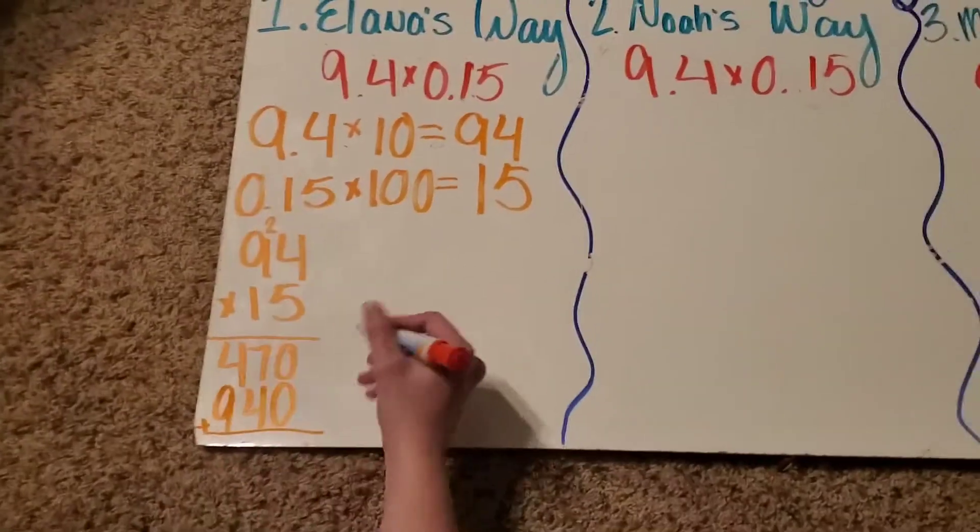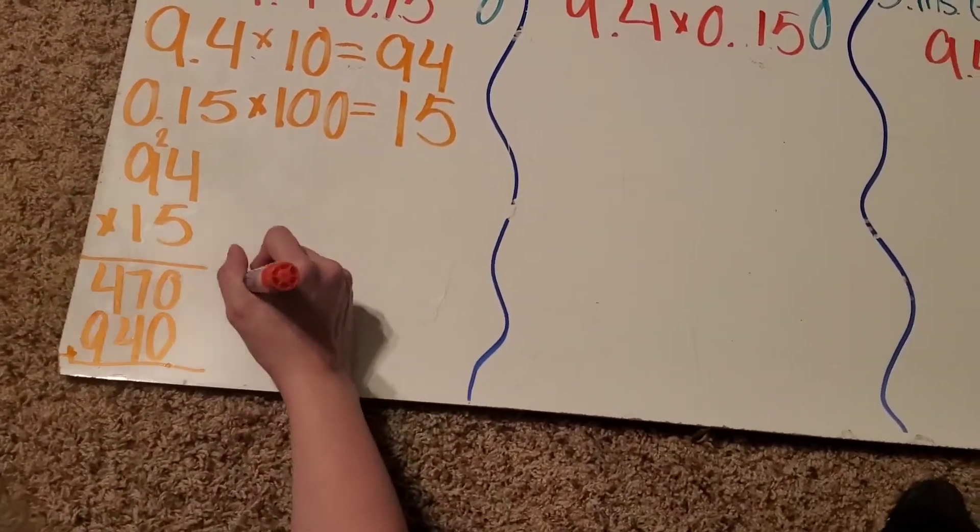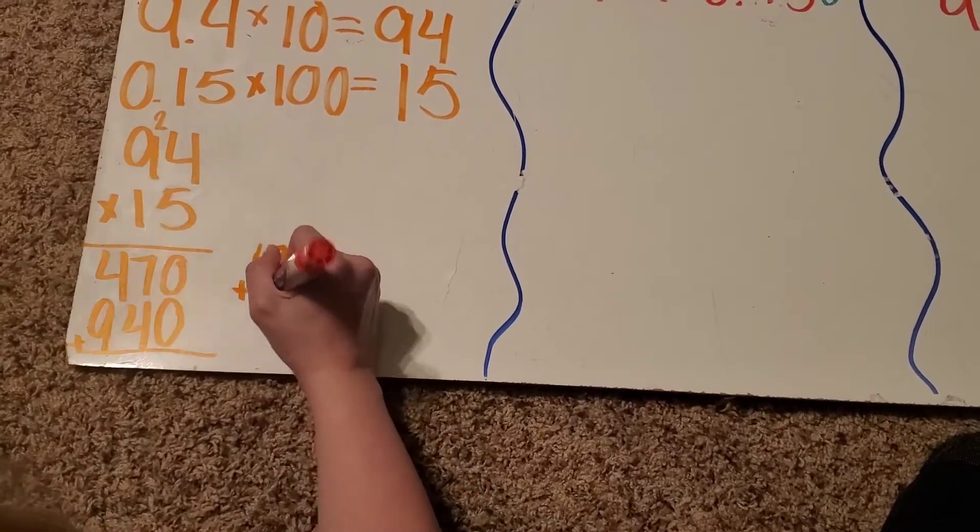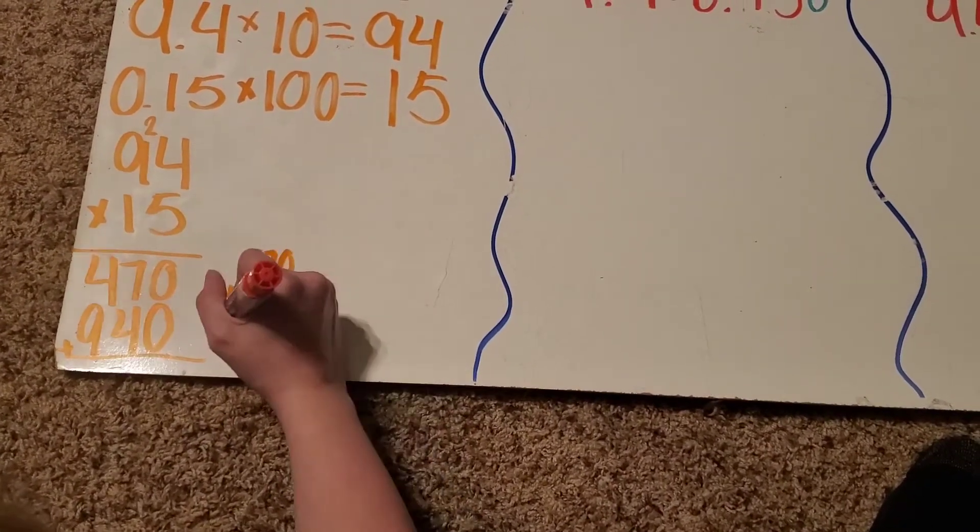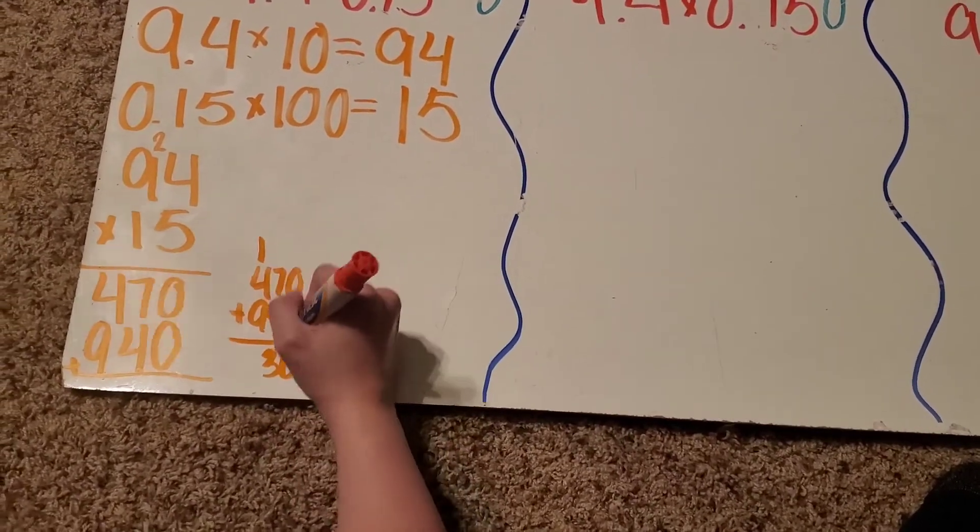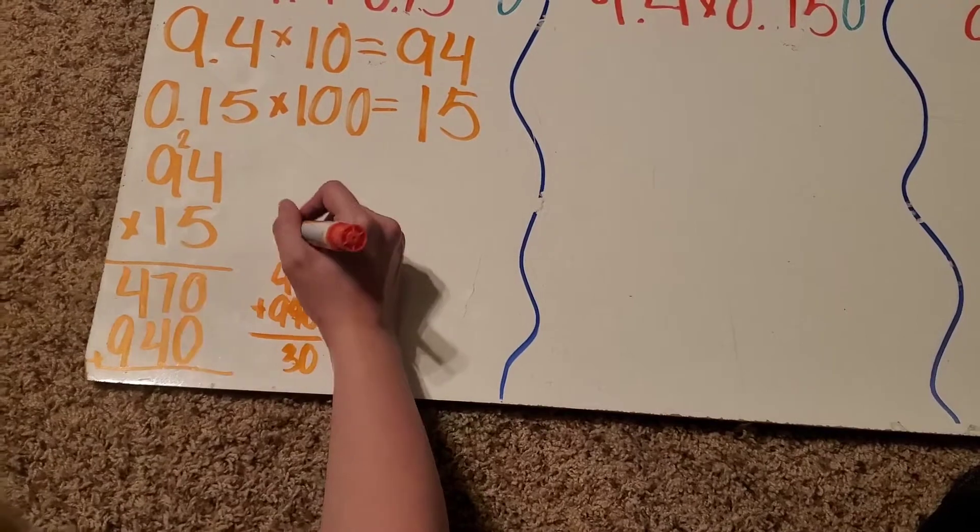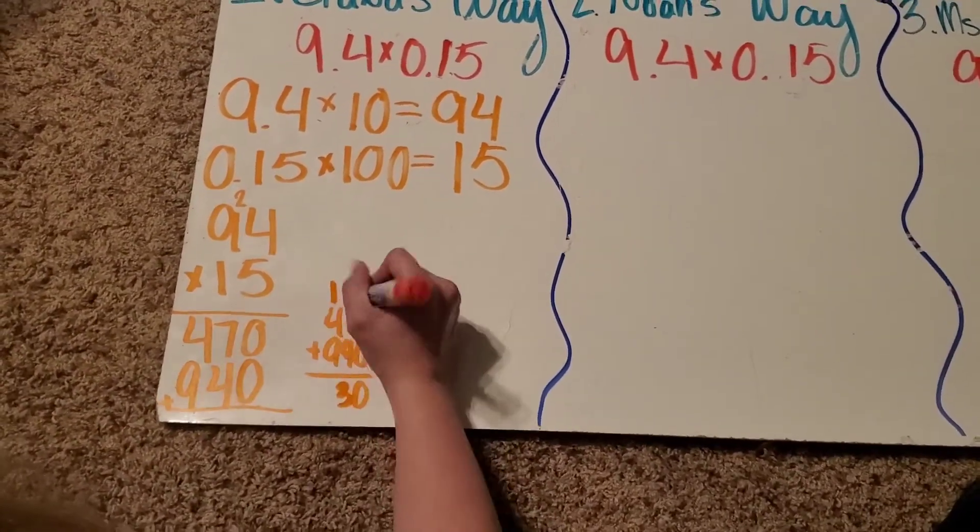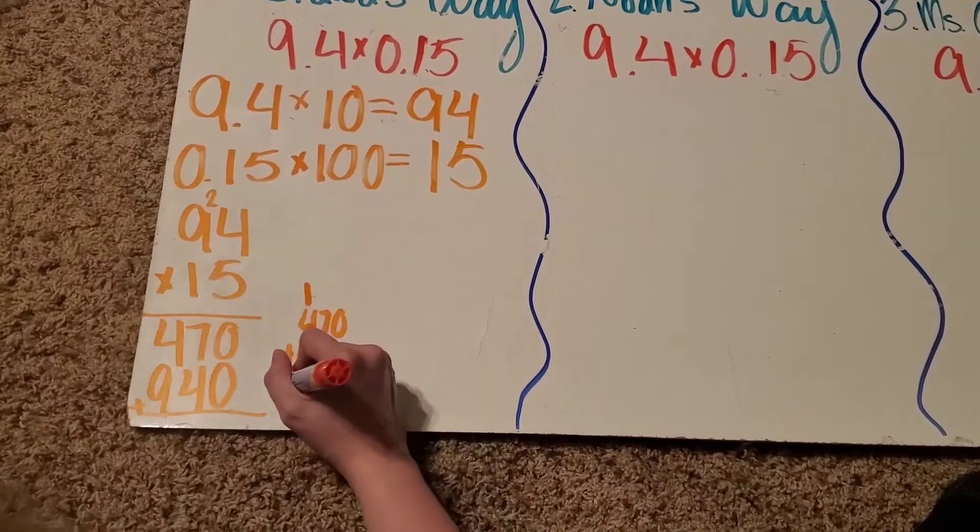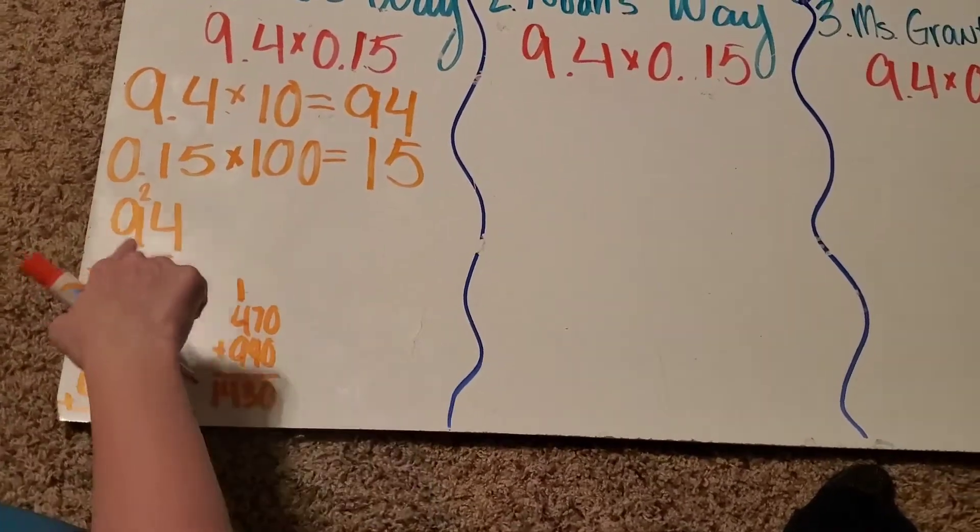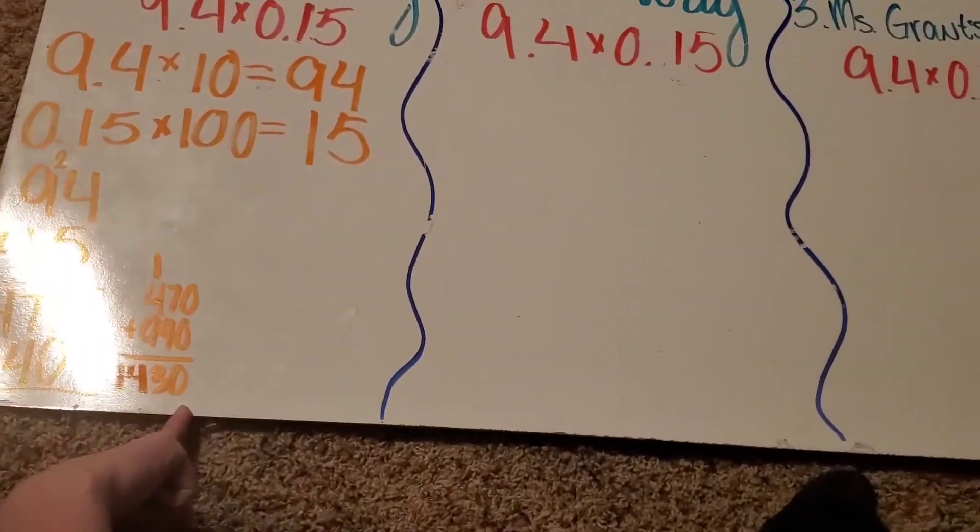Now, I need to add these. I'm running out of room. 0 plus 0 is 0. 7 plus 4 is 13. Bring down the 3. Carry the 1. 9 plus 4 plus 1 is 14. So, 94 times 15 is 1,430.